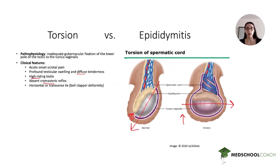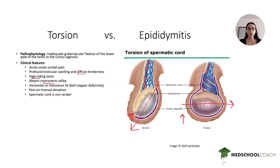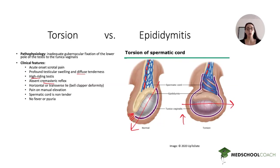Another classic finding: manual elevation of the testis elicits worsening of the pain. The spermatic cord itself is not tender when palpated — which contrasts with epididymitis where the spermatic cord is very tender. Finally, there is no fever or pyuria — no white blood cells in the urine and no fever, although you can sometimes see fever in epididymitis. To diagnose torsion, you perform a Doppler ultrasound and will see reduced or absent blood flow to the affected testis.